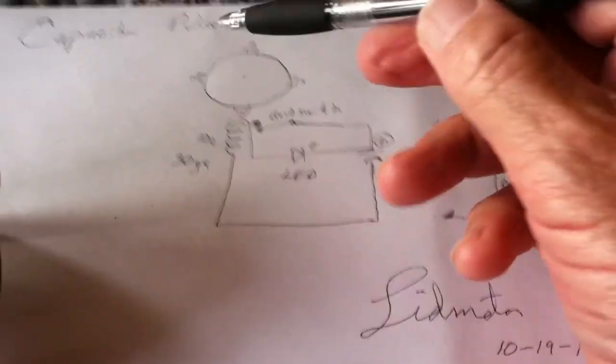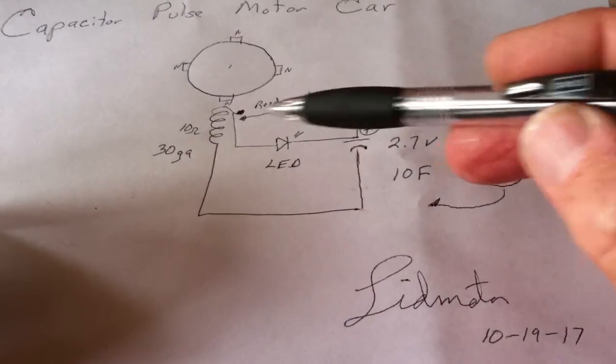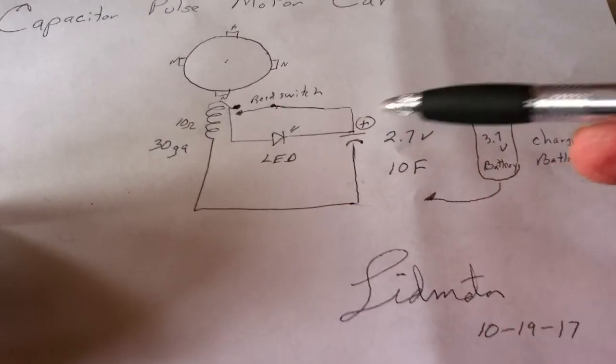And basically this is just a reed switch pulse motor. A reed switch LED going backwards to the plus rail.